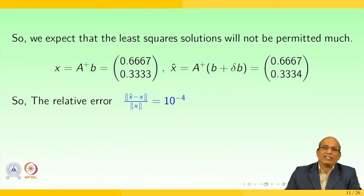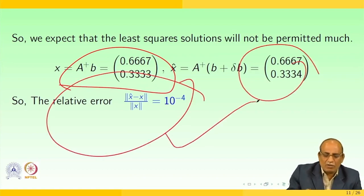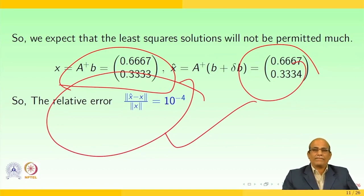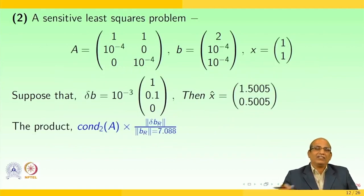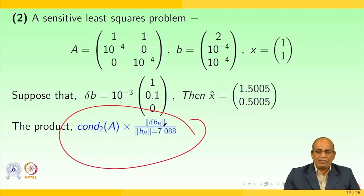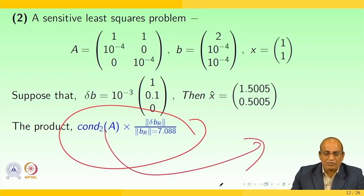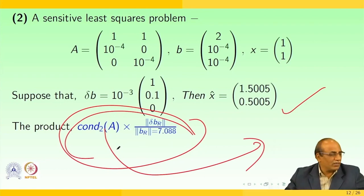The very small condition number leads to a stable solution. We expect the solution will not be perturbed much — X equals A plus B and X-hat are very close, with a relative error of 10 to the power minus 4. Further, the condition number of A with norm of delta B_R is 7.008, confirming the stable behavior of this system.